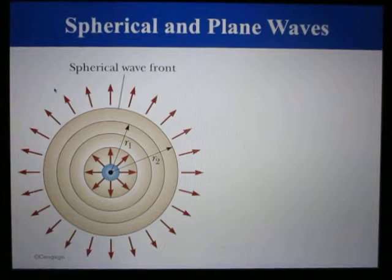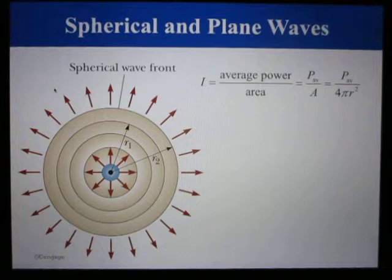This means the intensity of the sound at a distance r from the source is given by this equation, which shows that the intensity of a wave decreases with increasing distance from its source, as you might expect. The fact that I varies as 1/r² is a result of the assumption that the small point source emits a spherical wave.